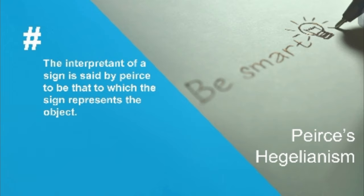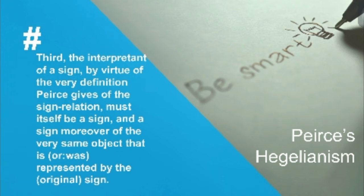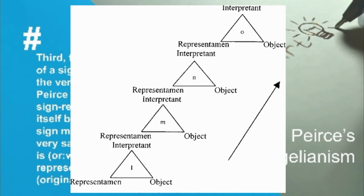The interpretant of a sign is said by Peirce to be that to which the sign represents the object. Peirce did not make this entirely clear in his works, but it is somewhat like a quality of mind or an activity of mind. Third, the interpretant of a sign must itself be a sign — and a sign of the very same object that was represented by the original sign. The interpretant is a second signifier of the object, and it can be third, fourth, and so on. There is an infinite sequence of signs of the same object — a continuous flow of mental interpretants.